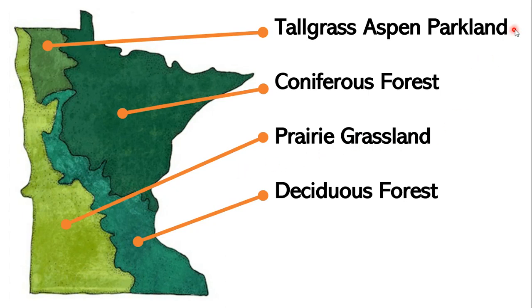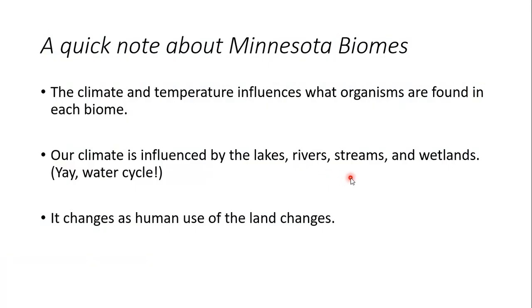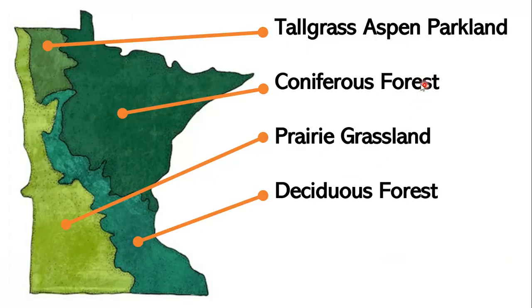All of these biomes describe basically what grows there and what kind of organisms live there. For the most part they're land biomes, but we know that we have a lot of water in Minnesota. Climate and temperature influence what organisms are found in each biome, and our climate is influenced by all the lakes, rivers, streams, and wetlands through the water cycle. So they all have an influence on climate, which then influences what organisms are found.